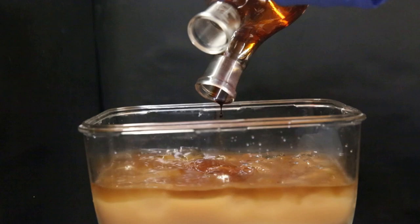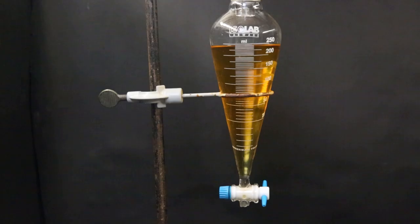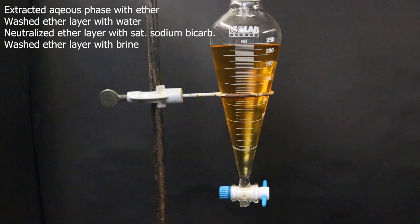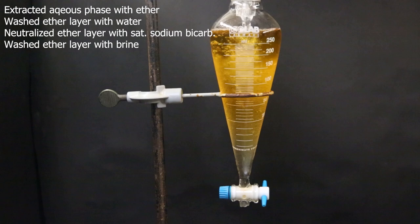Then I set up a large beaker with a funnel and transferred all of the contents into it. Then I moved it in parts to the separatory funnel and separated the water and the ether layer. Then I extracted the water layer with ether, washed the ether layer with some water to wash out the bulk of the acid, and then I neutralized the ether layer with a saturated sodium bicarbonate solution. And finally I washed it with some brine.